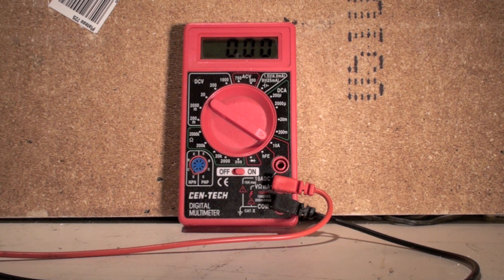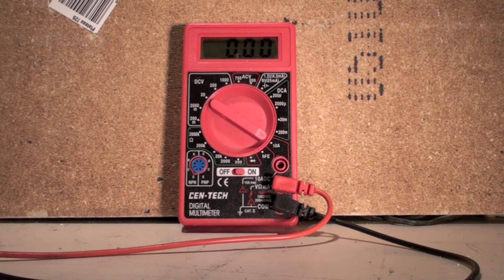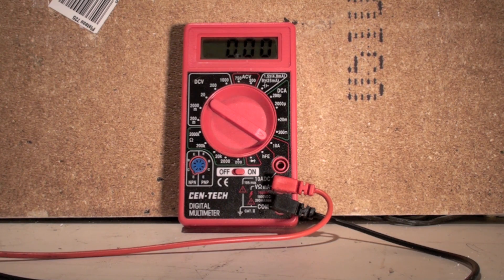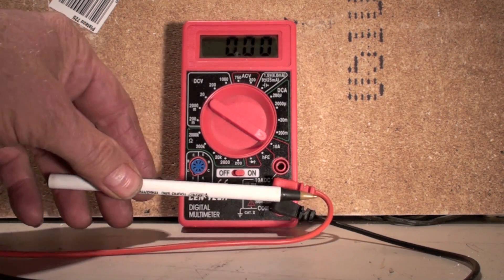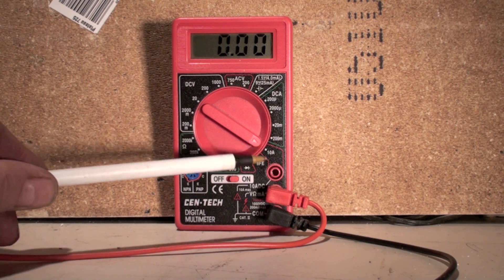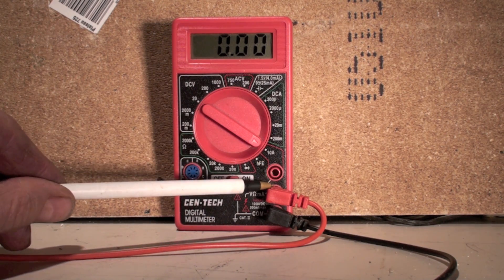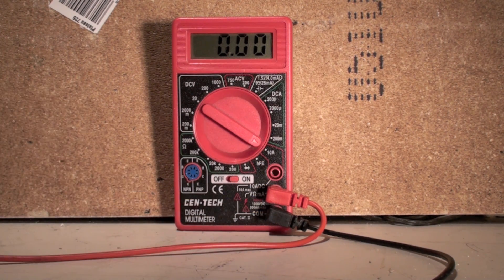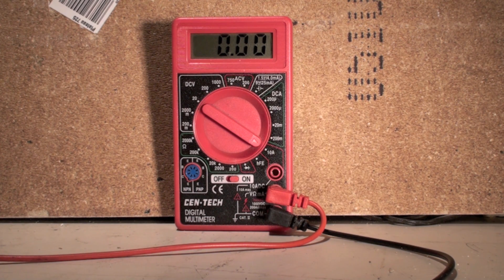This meter will read amps, but it's called inline amps, and that means the power actually has to go through the leads into the meter, come back out the meter, and then the meter can measure it. It's for very small amperage loads.